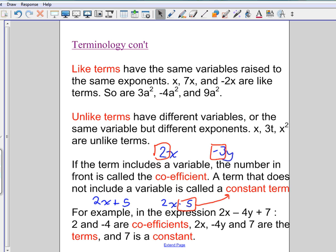And the bottom here just has some examples. So 2x minus 4y plus 7. 2 and negative 4 would be the coefficients because those have variables. 7 would be the constant because it doesn't. So constant is a term that never changes. And then 2x, negative 4y, and 7 would be the terms.